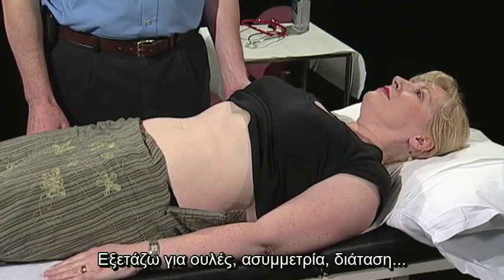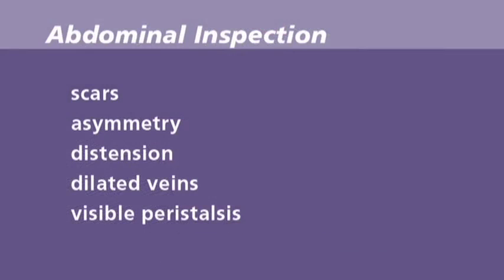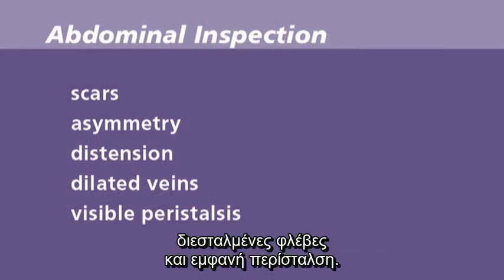I'm now inspecting the abdomen for scars, asymmetry, distension, dilated veins, and visible peristalsis.